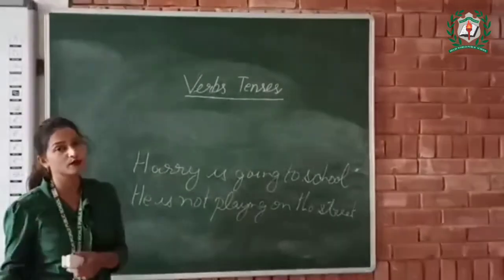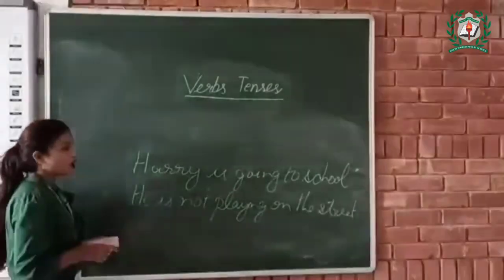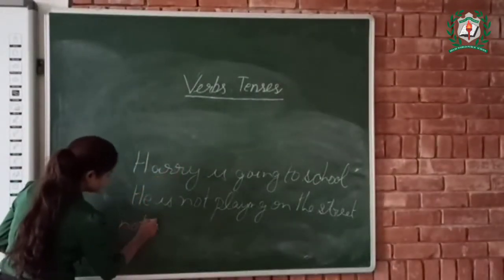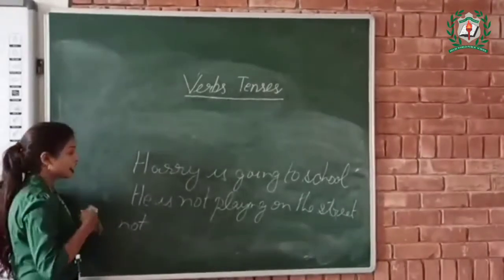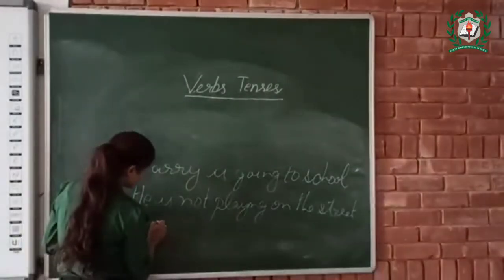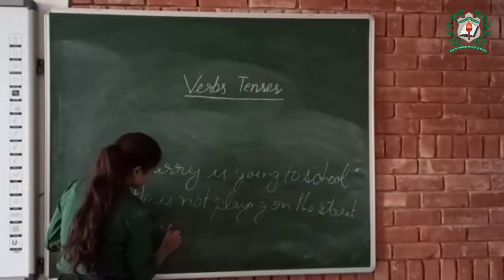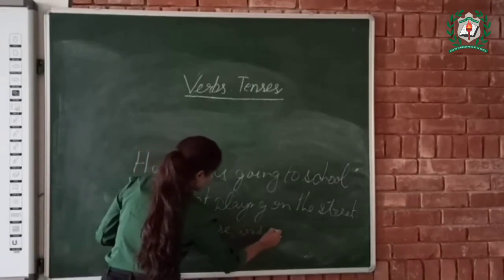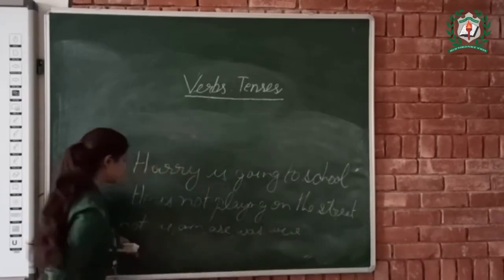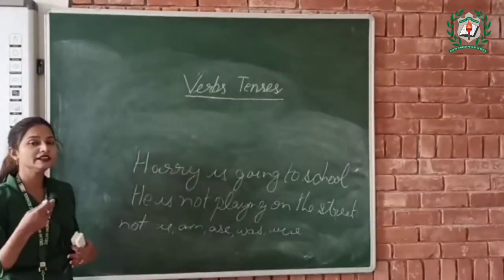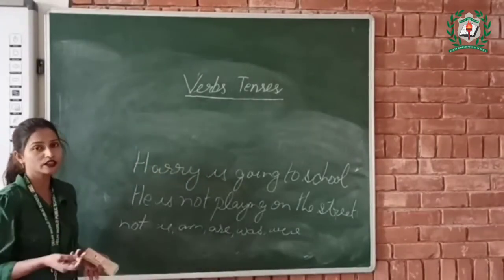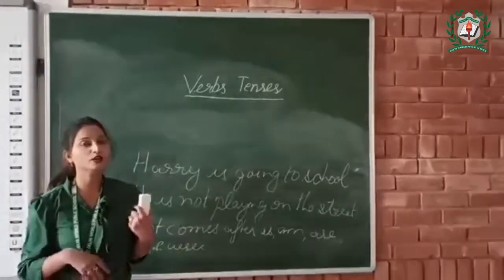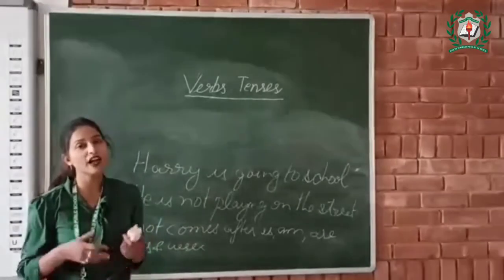Children, always remember that we use not after the helping verbs is, am, are, was, and were. It always comes after is, am, are, was, and were. I hope you have understood what tense is and how to use not with the helping verb. Thank you. Bye-bye.